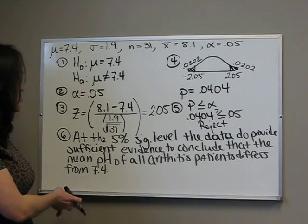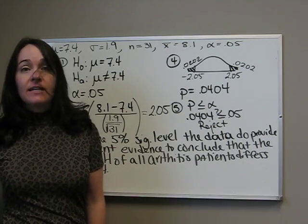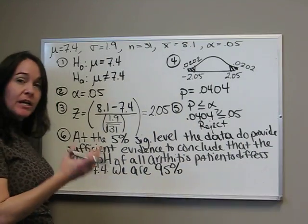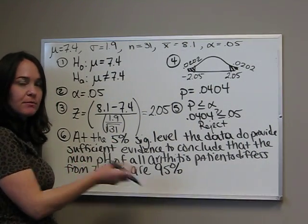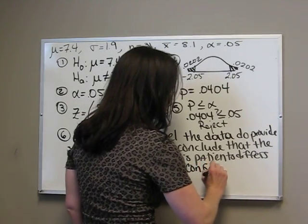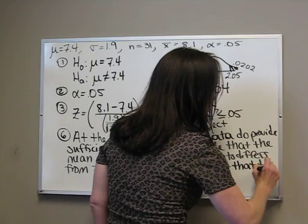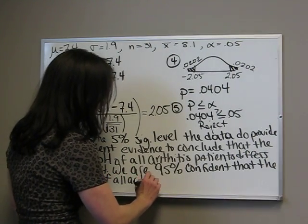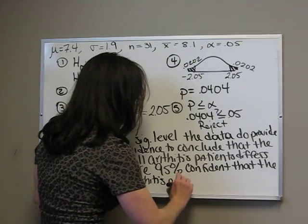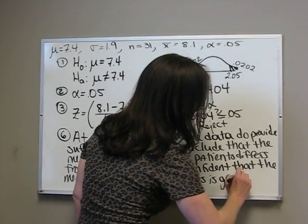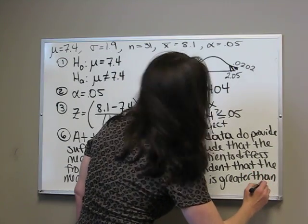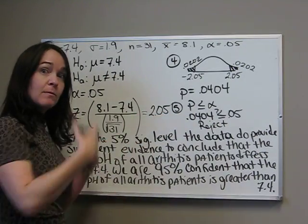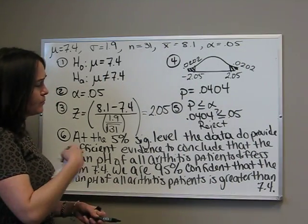That's our first sentence, just that it's different. Now, we put if it's less than or greater than. Remember that it has to add up to 100%, so 5 plus 95% would be 100. So, we are 95% confident that the mean pH of all arthritis patients is greater than 7.4. It's greater than because our z-score is positive, meaning that it's larger than what's expected for our mean.